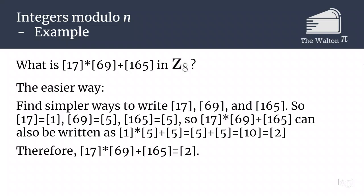So we can rewrite our problem as the class of 1 times the class of 5 plus the class of 5. So we get 5 plus 5, which is 10, which reduces to 2 in Z mod 8. And so that is the easier way if you are dealing with much larger numbers. Reduce first and then do the problem.